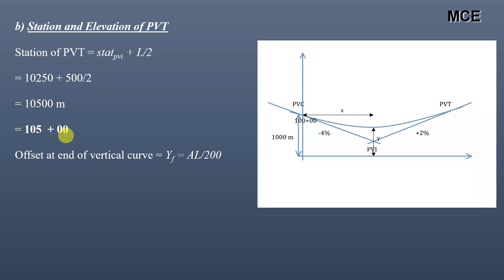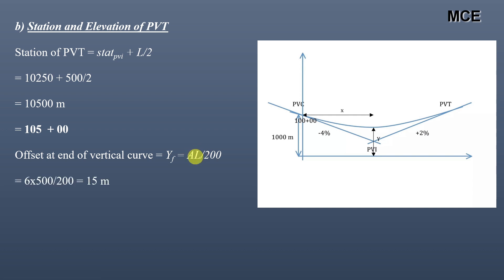The offset at the end of the vertical curve is calculated using the formula: offset = (A × L) / 200, where A is the absolute difference of grades in percent and L is the length of the curve. With A = 6% and L = 500, the offset equals (6 × 500) / 200 = 15 meters.